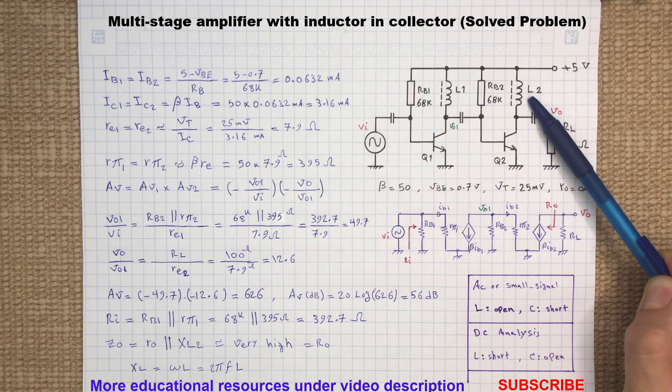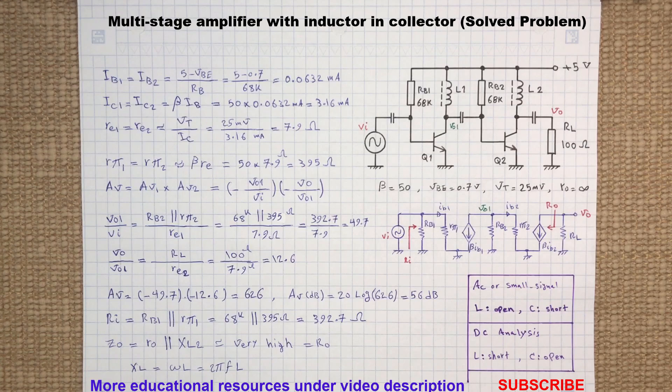So the inductors only feed DC current to the collector of the transistors, while isolating the power supply from the RF spectrum. Second, we analyze this multi-stage amplifier at the moderate frequencies.